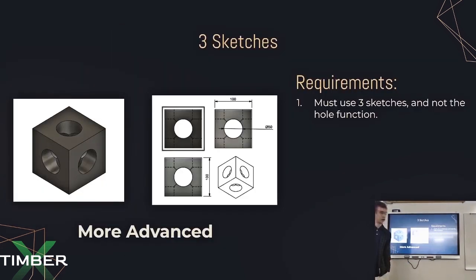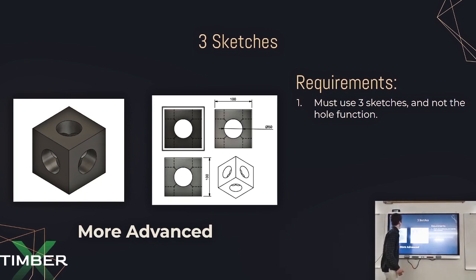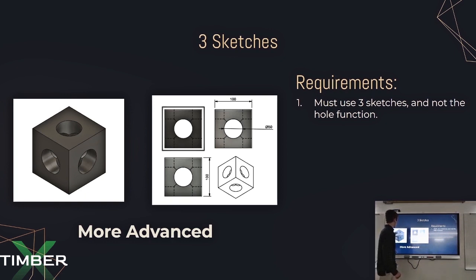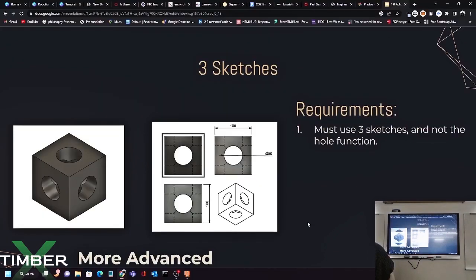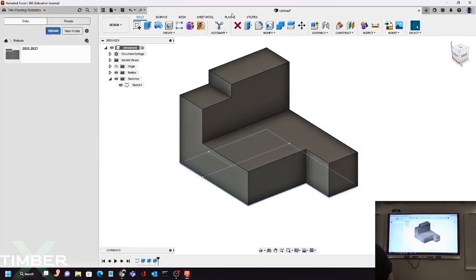Here's another design that requires some more advanced skills. We're going to design this one together. In this case we'll actually need to use three different sketches instead of one, as we can't compress this shape down into one plane. This is a cube with 100 units across and a 50-unit diameter circle in the center.